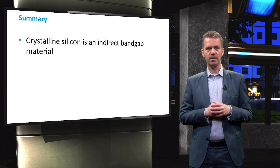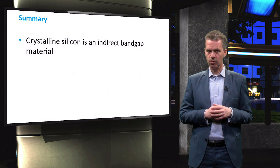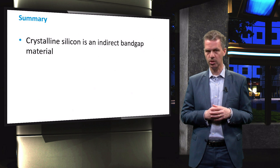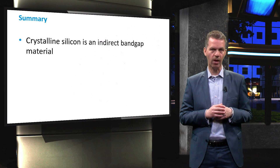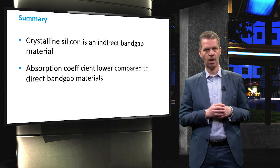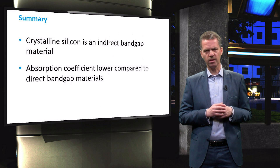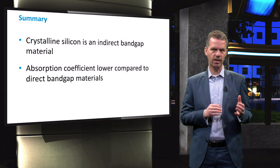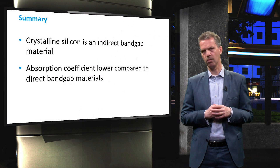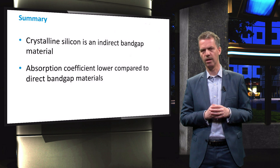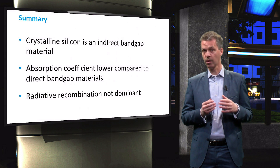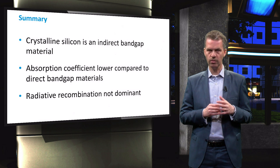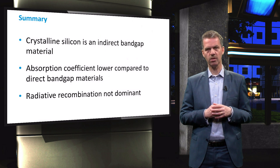To summarize this video, we have discussed that the lattice orientation of crystalline silicon has an effect on the energy dispersion diagram, making silicon an indirect bandgap material. The absorption coefficient is therefore much lower than that of direct bandgap materials, such that a thicker layer of material is required to absorb a large fraction of the incident light. On the other hand, radiative recombination can be neglected in crystalline silicon as a phonon is required to conserve crystal momentum, making this recombination mechanism less likely.